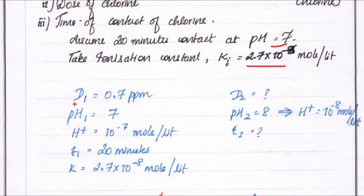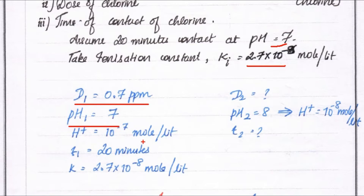The given values are: dosage D1 = 0.7 ppm, pH1 = 7, so H⁺ ion = 10⁻⁷ mole per liter. Time T1 = 20 minutes, and ionization constant Ki = 2.7 × 10⁻⁸ mole per liter.